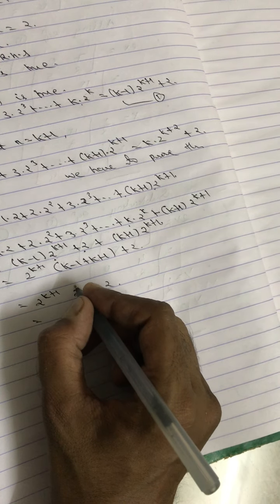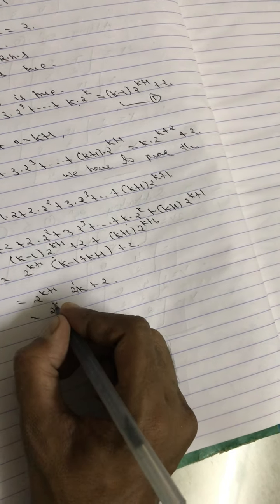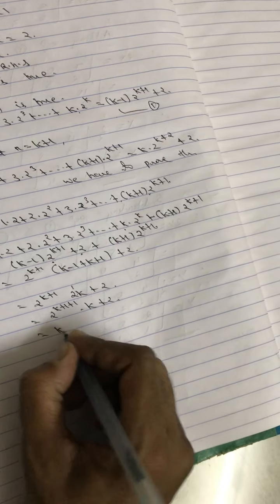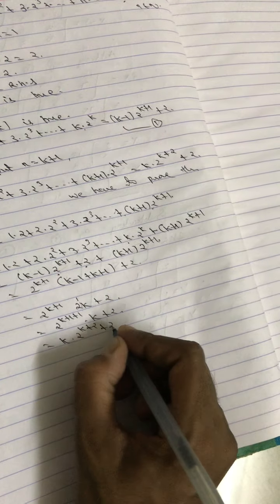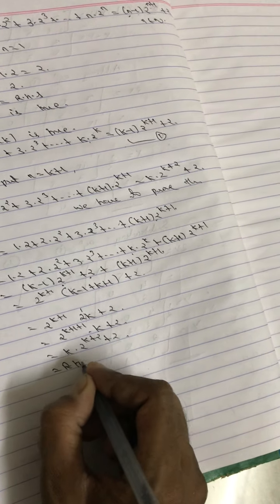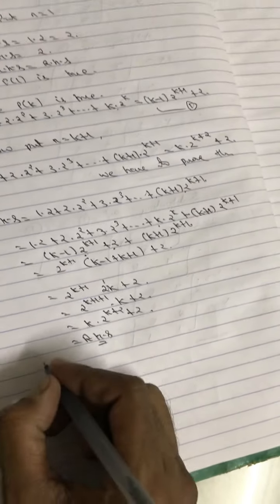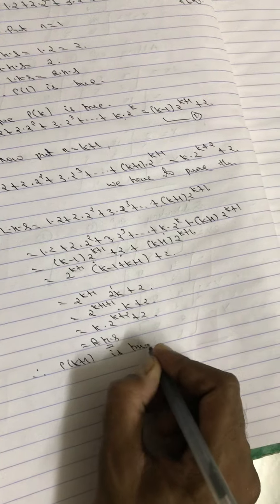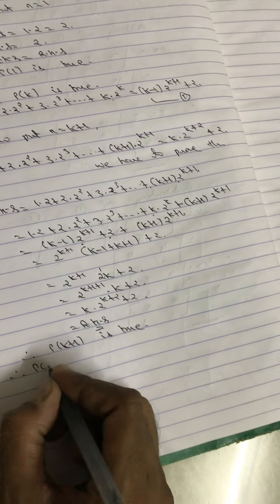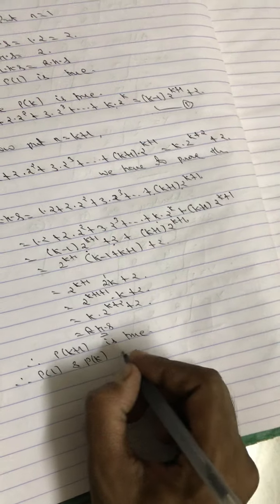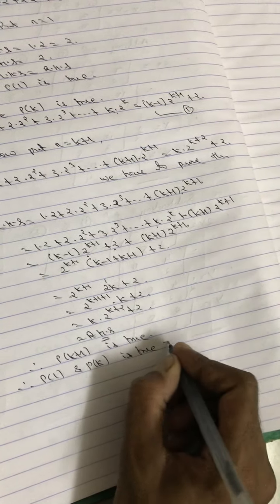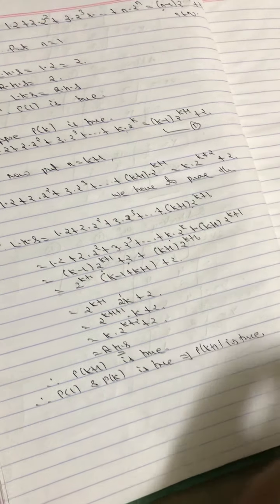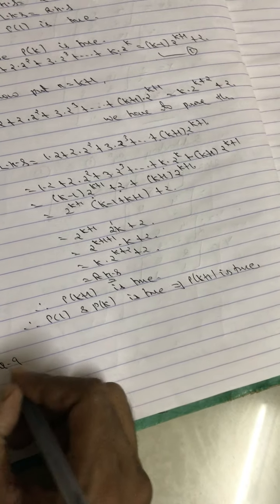So 2k·2^(k+1) + 2 = k·2^(k+2) + 2, which equals RHS. Therefore P(k+1) is true. Therefore P(1) is true and P(k) is true implies P(k+1) is true. Done. Now question number 9.